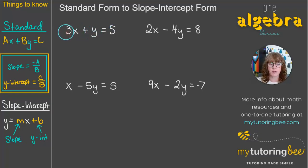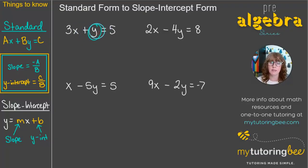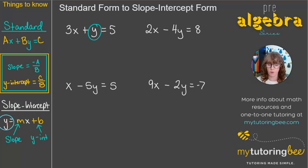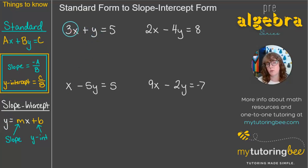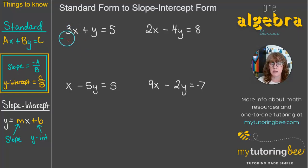Let's take a look at this first equation: 3X plus Y equals 5. We want to solve for Y — we want Y to be on the left-hand side of the equal sign by itself, like in slope-intercept form. So we need to get rid of this 3X by subtracting the whole term.